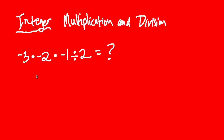When you're given a problem that involves the multiplication and division of integers, remember that multiplication — this dot right here is multiplication — and division are inverse operations. So to follow the correct order of operations, we solve what comes first, meaning what comes the most to the left.